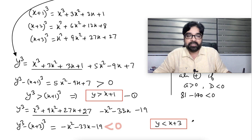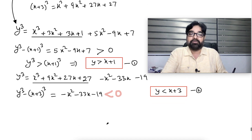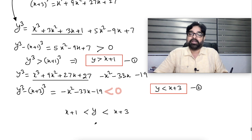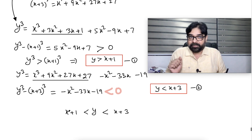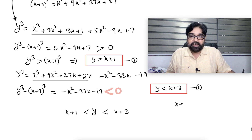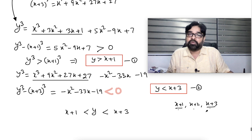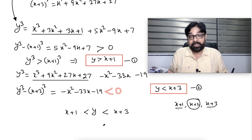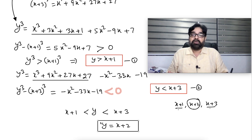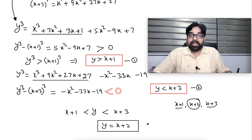Now let's combine both conditions: y is greater than x plus 1, and y is less than x plus 3. Since x plus 1, x plus 2, and x plus 3 are consecutive integers, the only integer strictly between x plus 1 and x plus 3 is x plus 2. Therefore y must equal x plus 2. We've now reduced to a single variable.